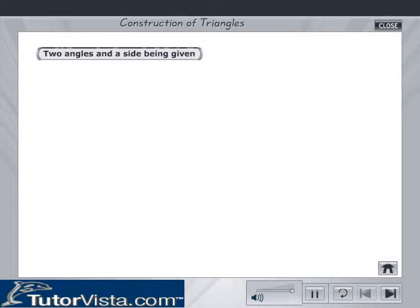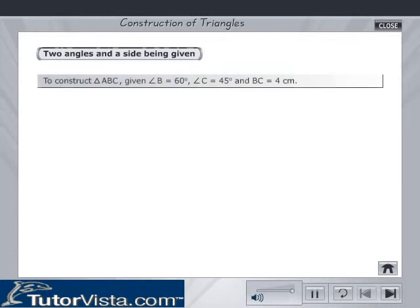Two angles and a side being given, we are required to construct a triangle ABC given angle B is equal to 60 degrees, angle C is equal to 45 degrees and BC is equal to 4 cm.